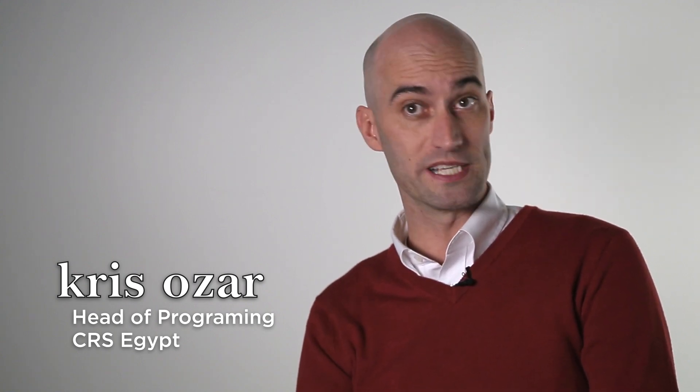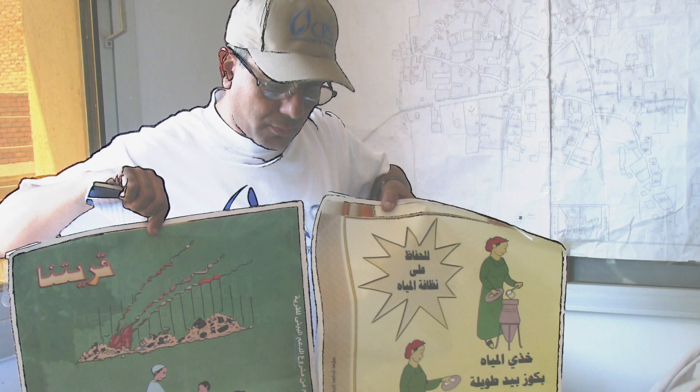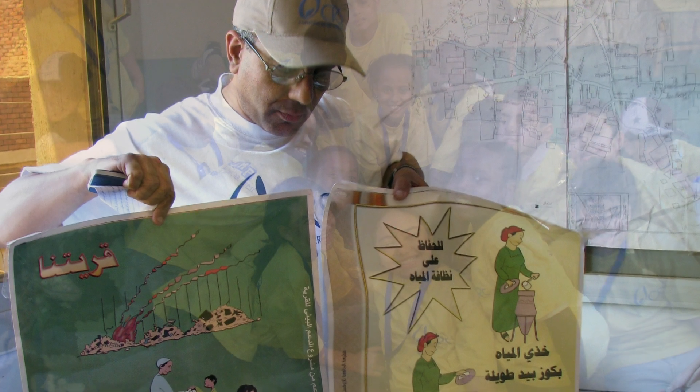As Head of Programming for CRS Egypt, my job is to lead the programming team—five direct reports, the project or program managers—to design and implement high-quality programming in the areas of education, livelihoods, and peacebuilding.